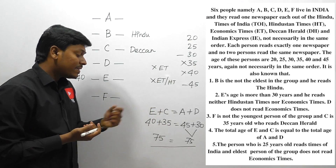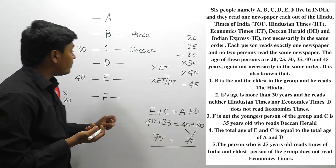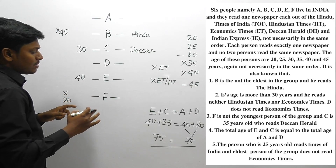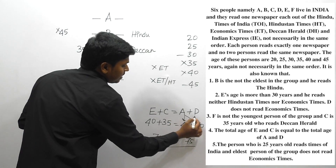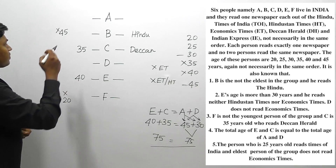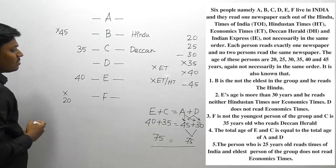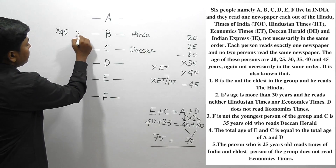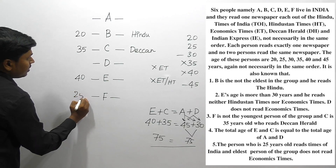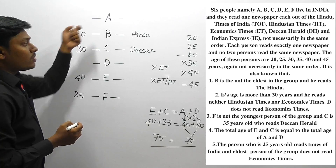We don't yet know whether A is 30 or 45, or whether D is 45 or 30. But we can note that A's age is either 45 or 30, and D's age is either 45 or 30. Since F is not the youngest and the remaining ages for B and F are 20 and 25, B must be 20 and F must be 25.